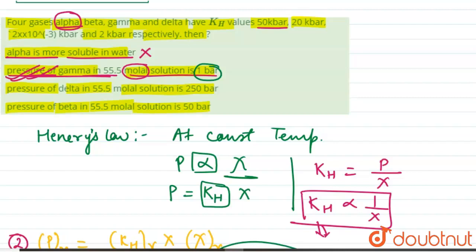In the similar way, we can also calculate the pressure of delta in 55.5 molal solution is 50 bar. We can similarly calculate with respect to option number 2.